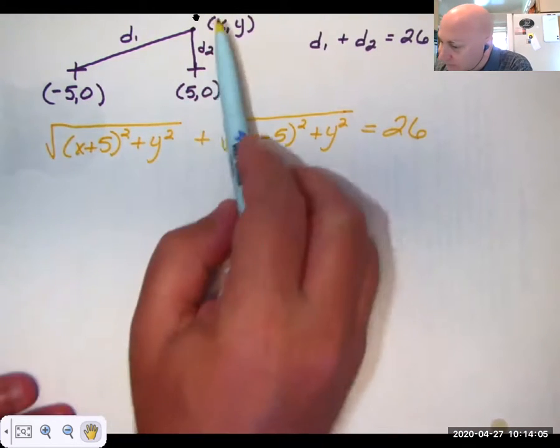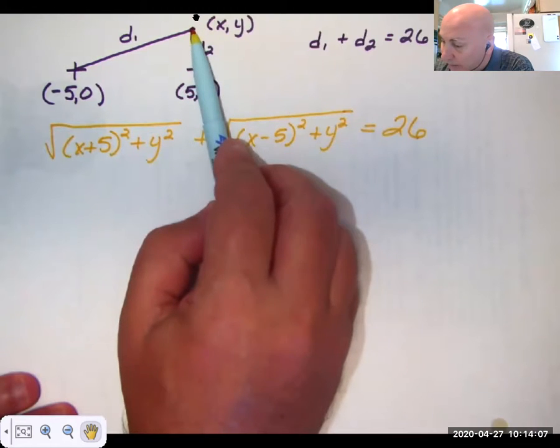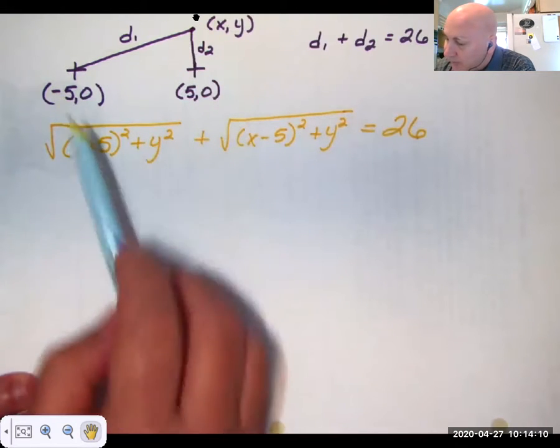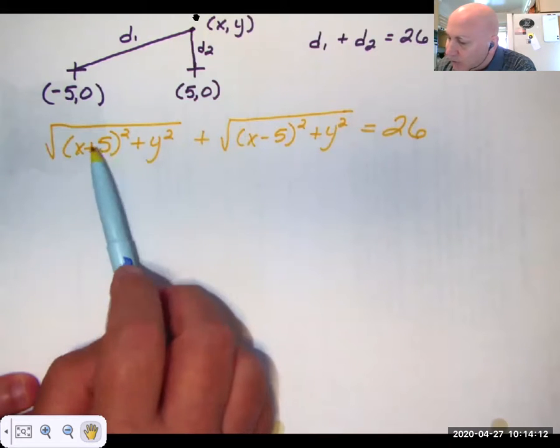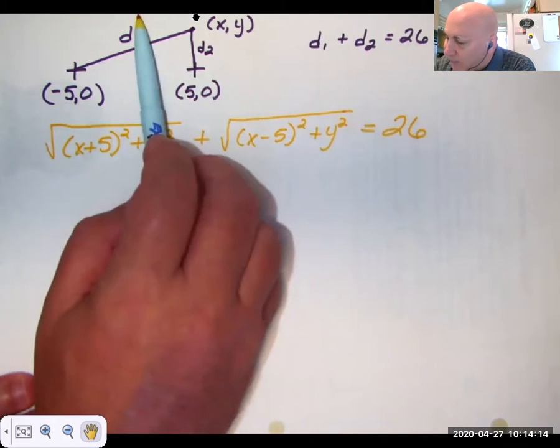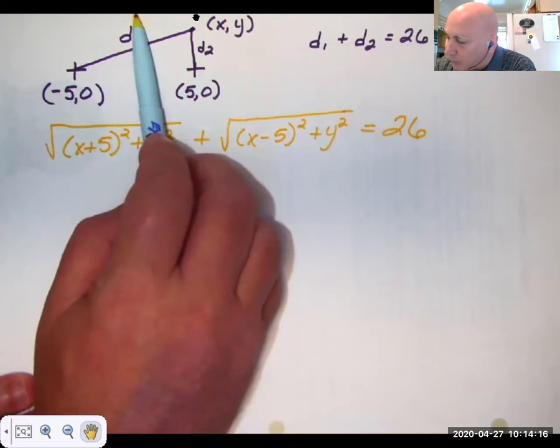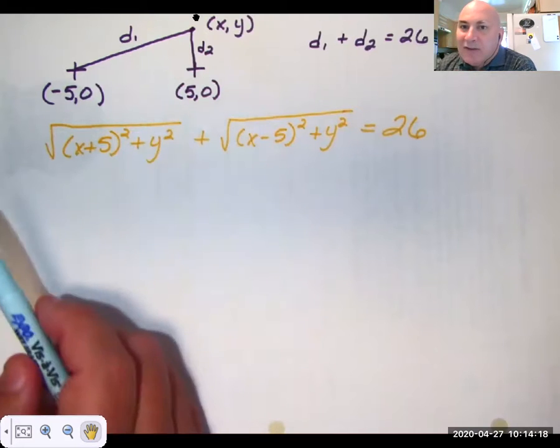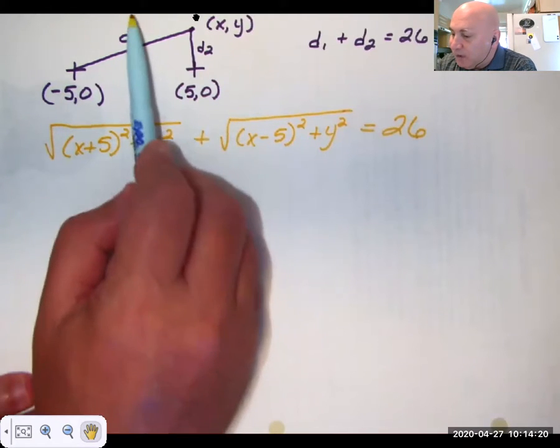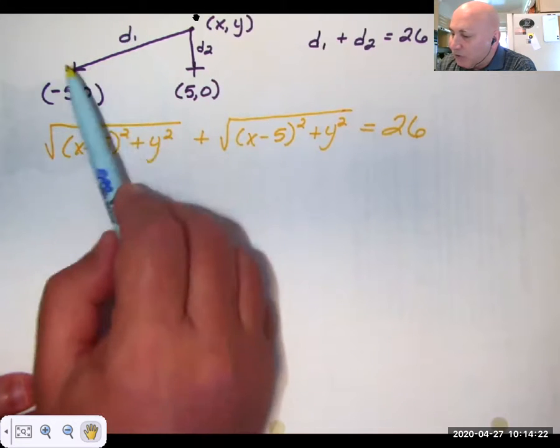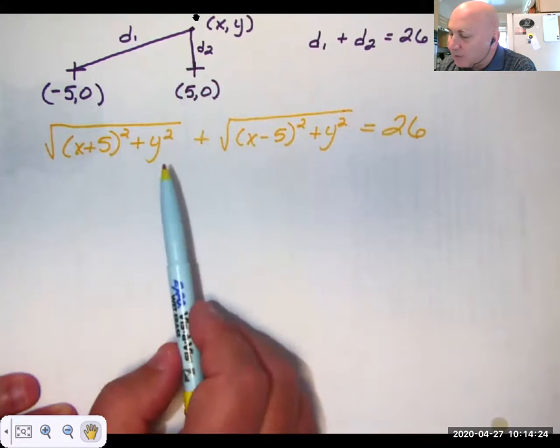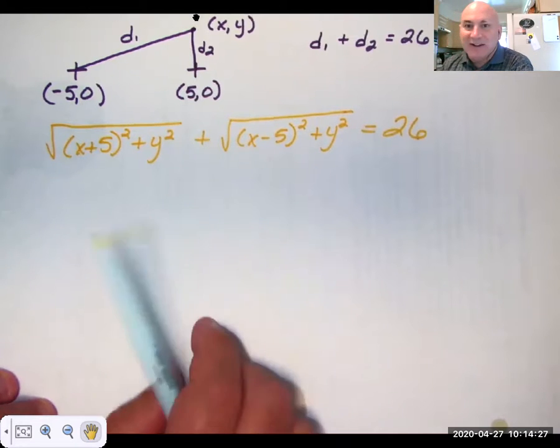So the distance from this random point x, y to here is given by the distance formula. You might say, well, why can't I just use some point up here, directly between them? Because from the definition, we don't even know if there's a point up here. We just have to pick a random x, y, which is what I did.